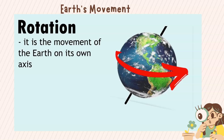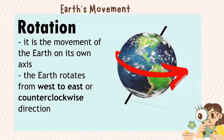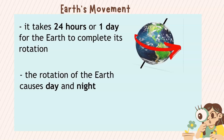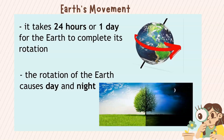Rotation. It is the movement of the Earth on its own axis. The Earth rotates from west to east, or counterclockwise direction. It takes 24 hours or one day for the Earth to complete its rotation. The rotation of the Earth causes day and night.